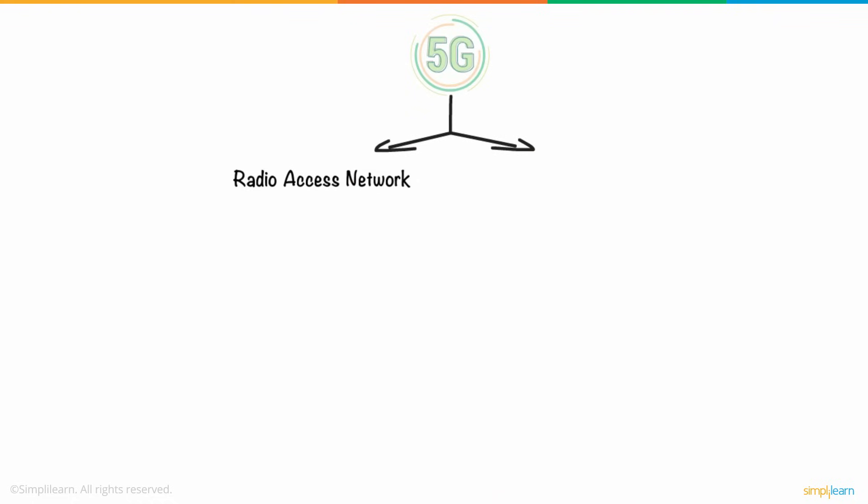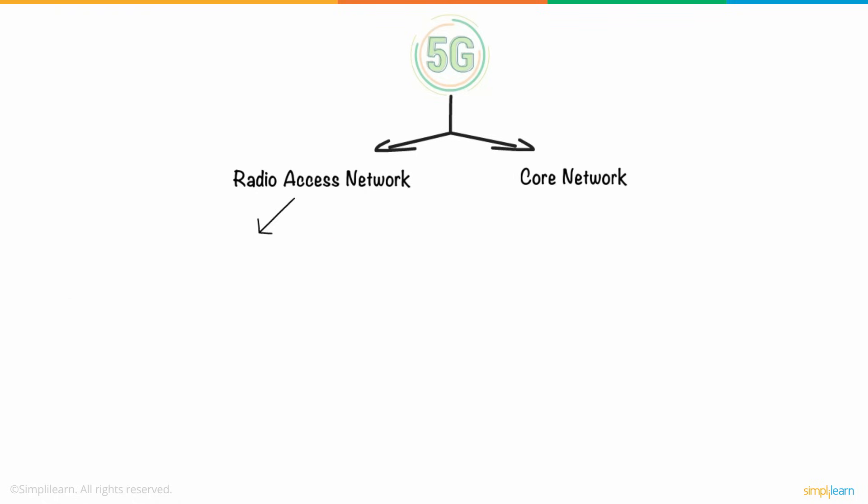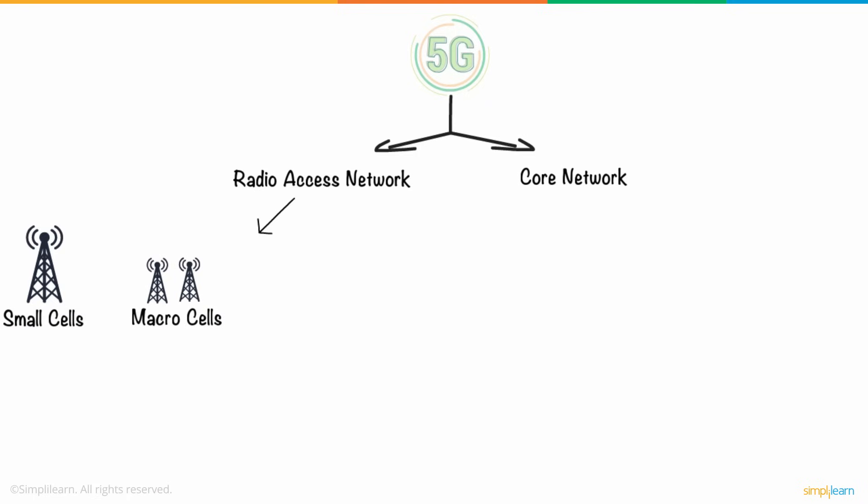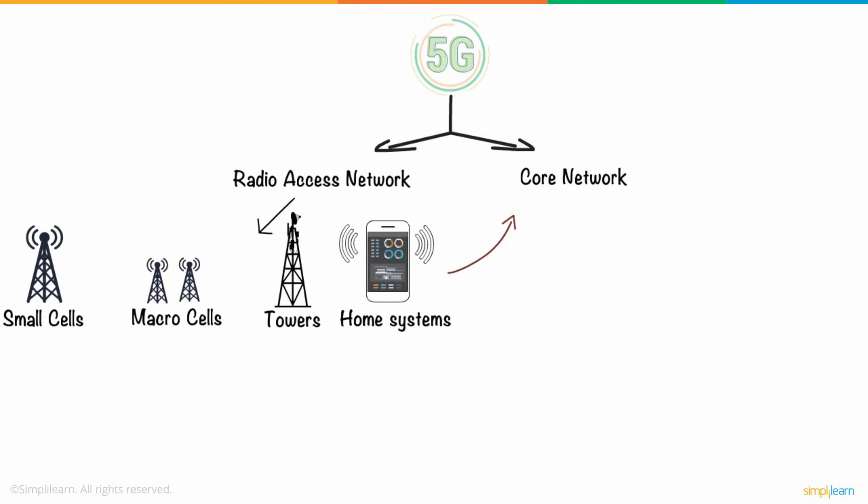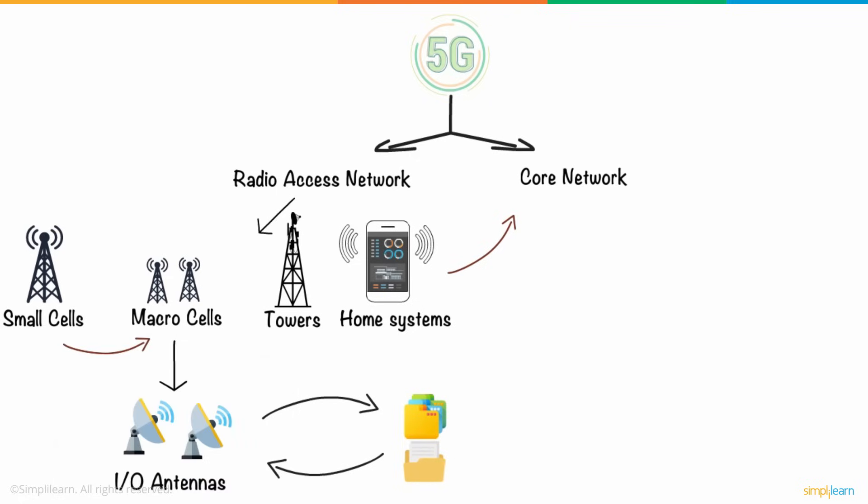he went on to understand that 5G consists of two main components, the radio access network and the core network. The radio access network includes small cells, macro cells, towers, and home systems connecting users like Ted and devices to the core network. Macro cells use multiple input and output antennas that enable one to send and receive large volumes of data simultaneously.